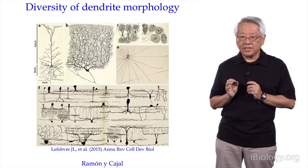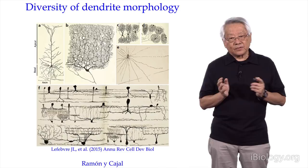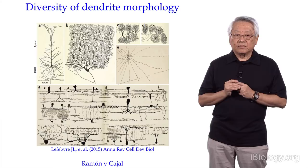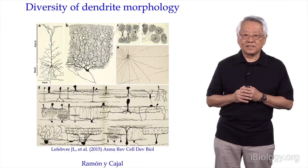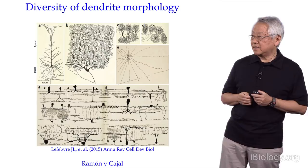When we started studying this problem about 20 years ago, very little was known. I was attracted to this problem because it's not only scientifically important, but also for its aesthetics — because dendrites are among the most beautiful structures in biology. Just look at the really spectacular dendritic arbor of a Purkinje cell.